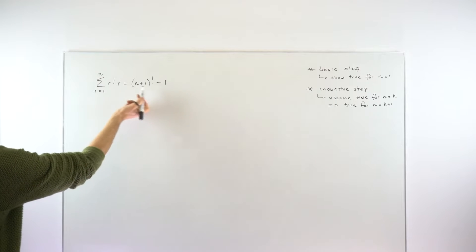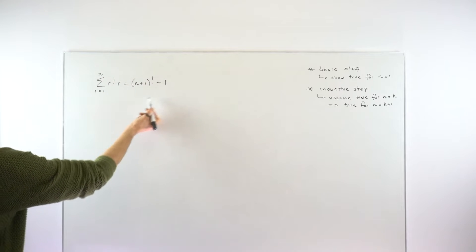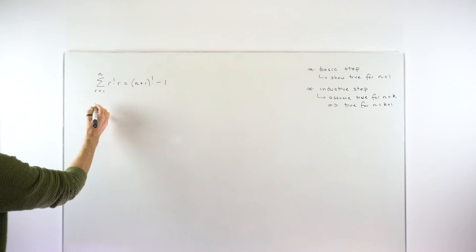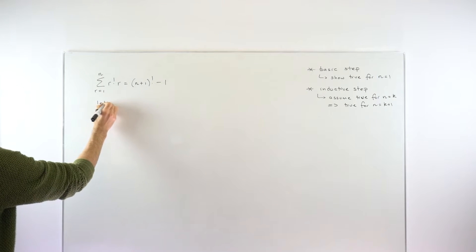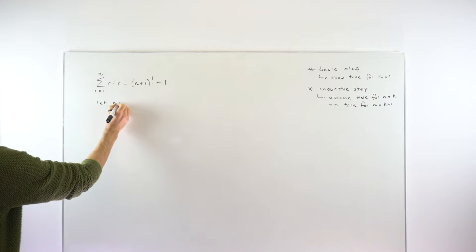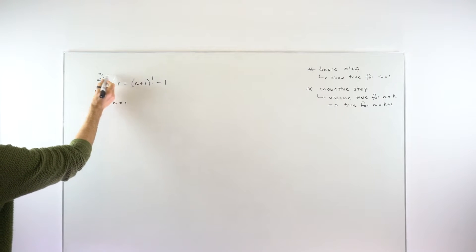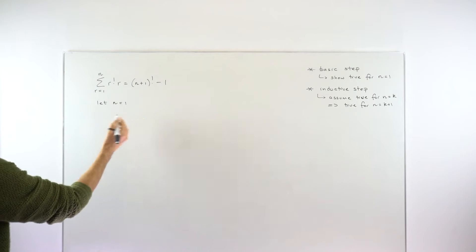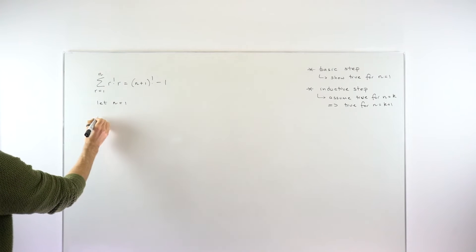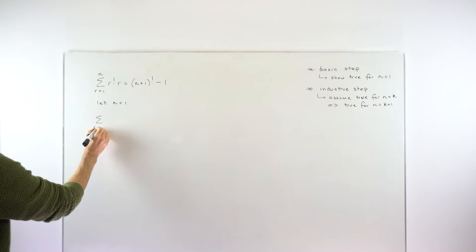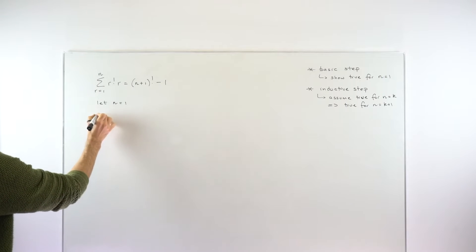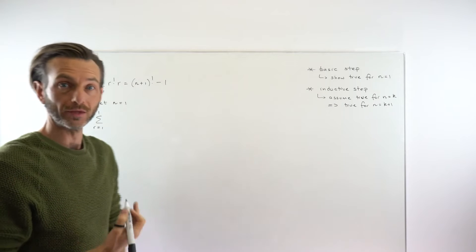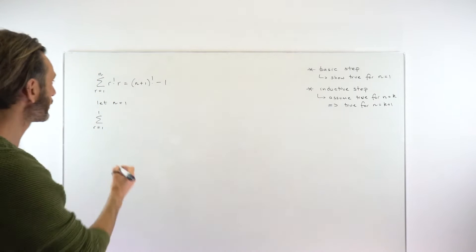So we'll start with the basic case. The basic case in this step is when n is 1. So we're going to let our n value equal 1. We're trying to show the left-hand side is equal to the right-hand side when n is 1. So we're going to take the sum from r equals 1 to just 1, which looks a little bit odd, but that's often how these are in proof by induction questions.